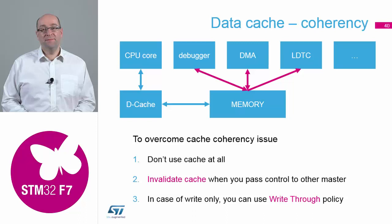Normally your CPU core will write into the cache and information will be going back to the core and then back to the cache. At that point, what's in the cache is now no longer representative of what's in the main memory, which your DMA, your debugger, and any other masters on the bus matrix are accessing.